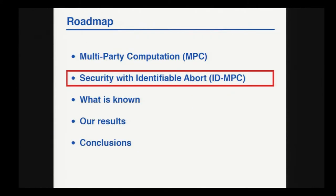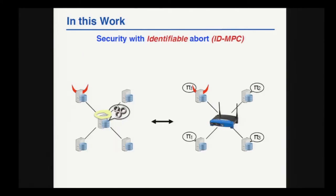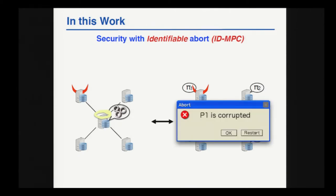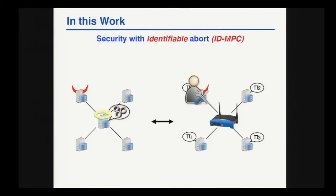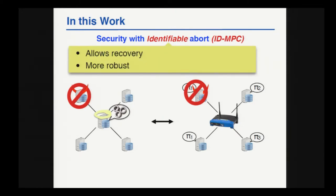In this work, we put forward a more robust notion of security with identifiable abort, or in short, ID MPC. Our notion is against dishonest majorities. The protocol is supposed to implement its specification as before, and it might abort — that we cannot avoid. But when the protocol aborts, everyone learns the identity of at least one cheater, at least one party that they can blame for the abort. Because they can, for example, restart the protocol, repair the compromised party, or even eliminate this party and continue the computation without them. So this is clearly a more robust and therefore more desirable notion of security.